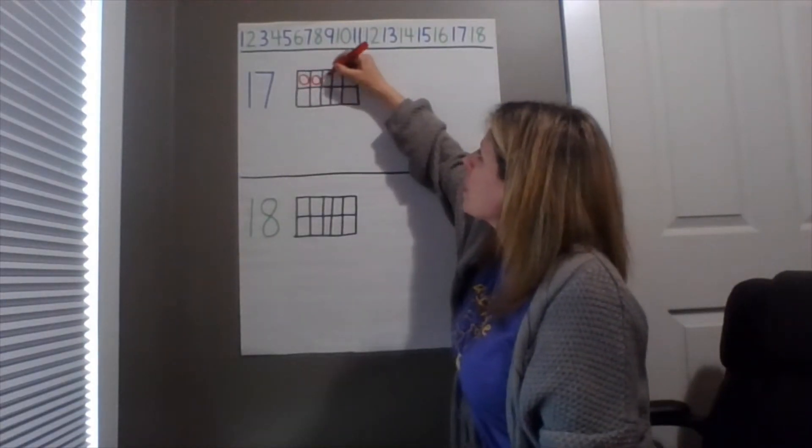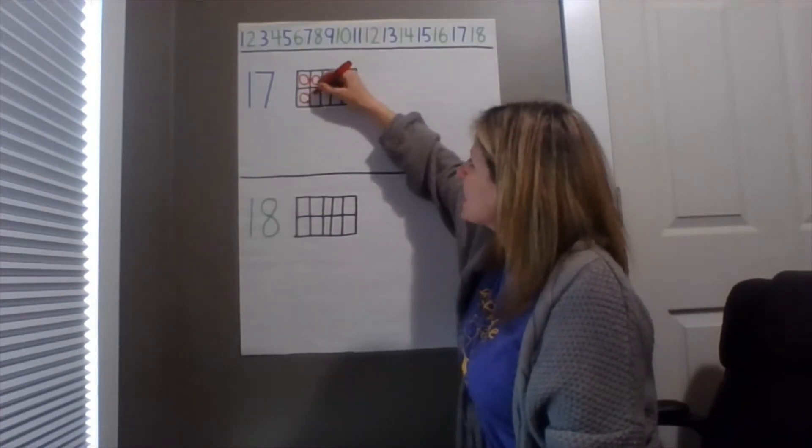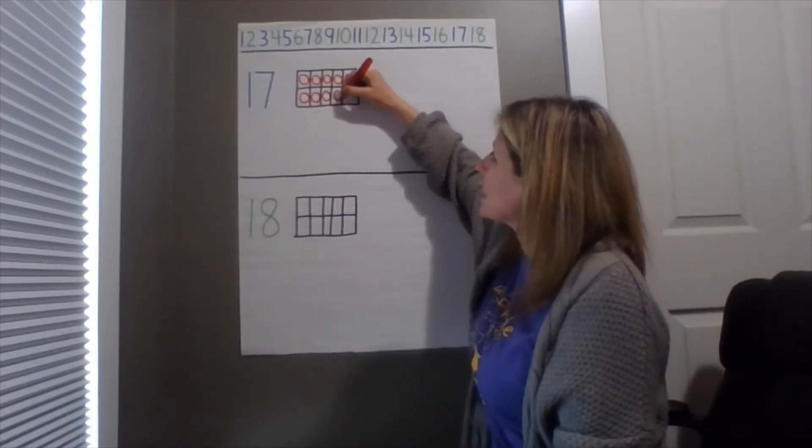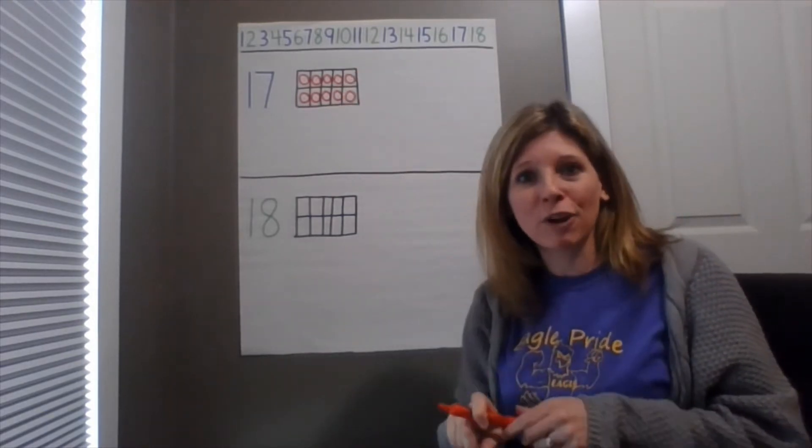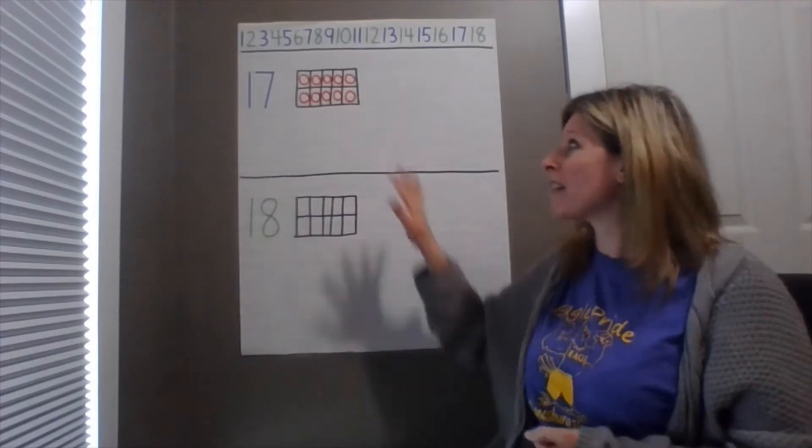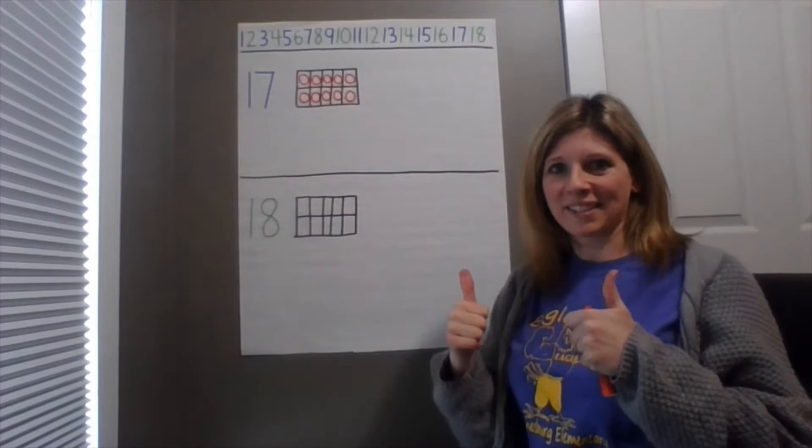1, 2, 3, 4, 5, 6, 7, 8, 9, and 10. Good. You should have a full 10 frame now. Your 10 frame should have 10 objects in it. If you have that, you're ready to go. Excellent.